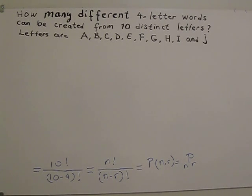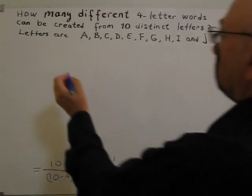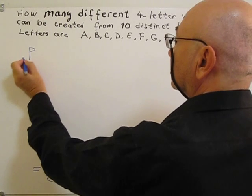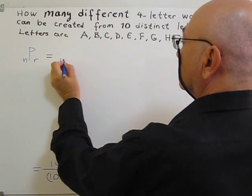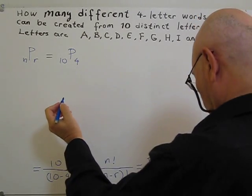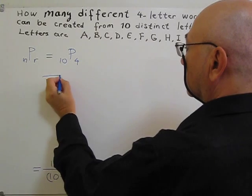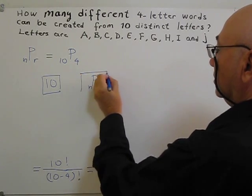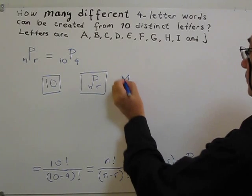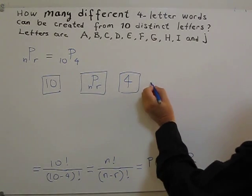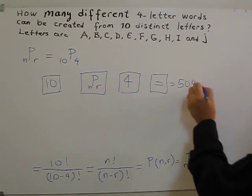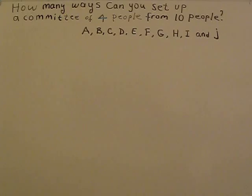Third way to do this problem is to use calculator. So how can we do this? This is the problem, basically: N, P, R. So ours is 10 P 4. First, enter ten in your calculator, then P and R. After that, you enter four. Then equal sign. You will get 5,040 ways.